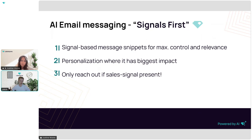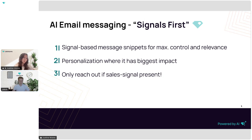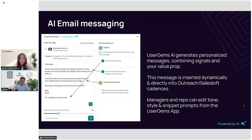Again using a signals-first approach, the idea is to build final messages based on signal-based message snippets. This allows us to gain maximum control over message generation and ensures relevance because we know the signals themselves are relevant. We also use personalization, but focus it where it has the biggest impact — mostly in the sales pitch, where we want to be as specific and targeted as possible. Finally, we only generate outreach when we've actually found sales-relevant signals.